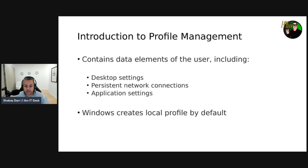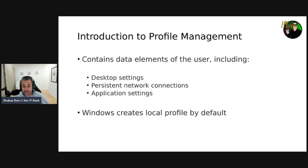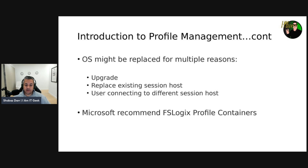A user profile contains data elements of an individual, including configuration information like desktop settings, persistent network connections, and application settings. By default, Windows creates a local user profile that is tightly integrated with the operating system. If you configure a user profile to be remote, it provides a partition between user data and the operating system, so you can change or replace the OS without affecting user data.